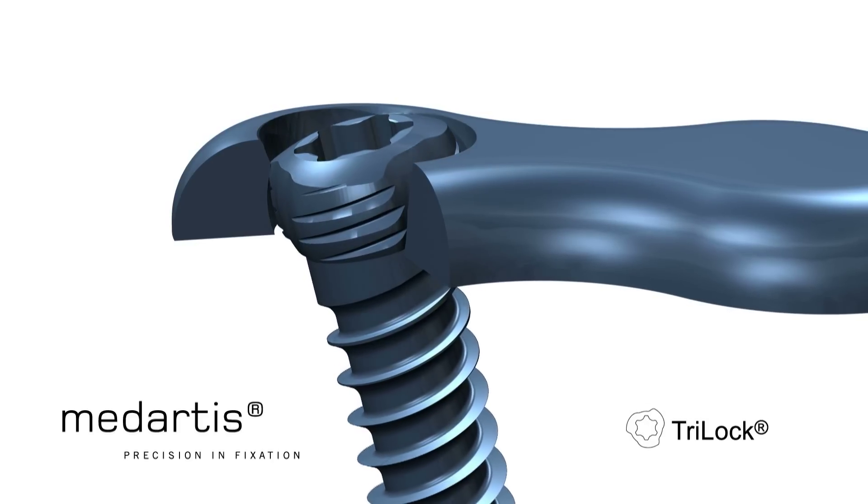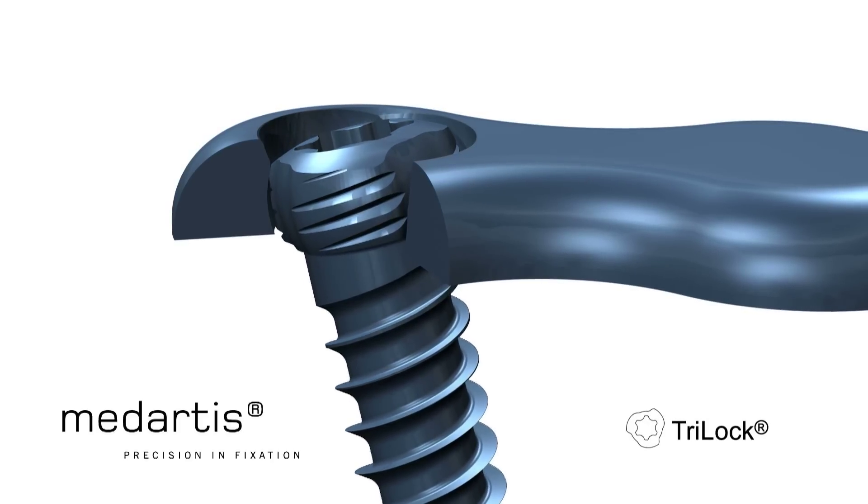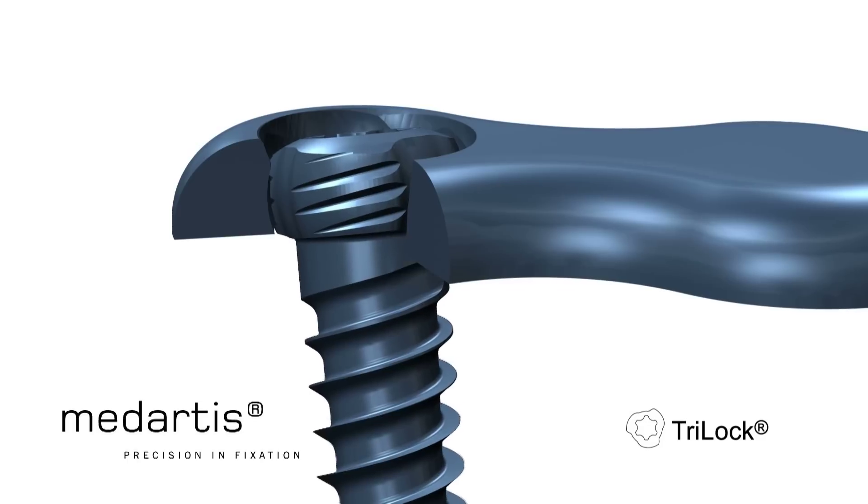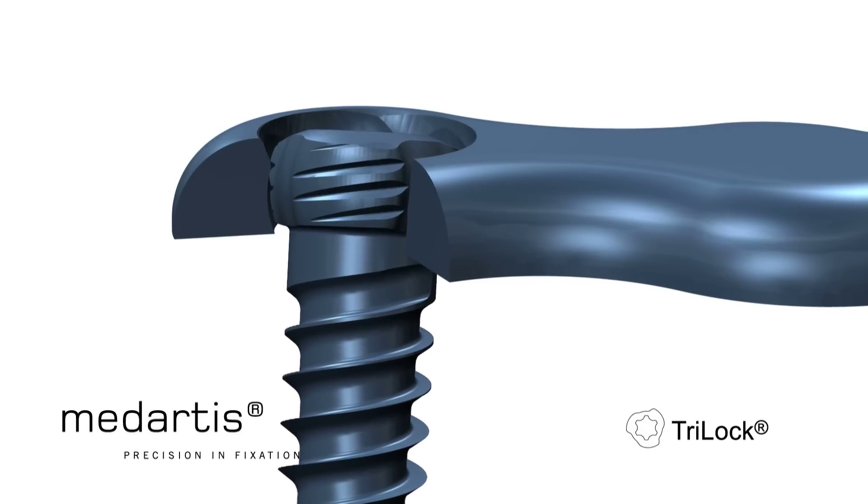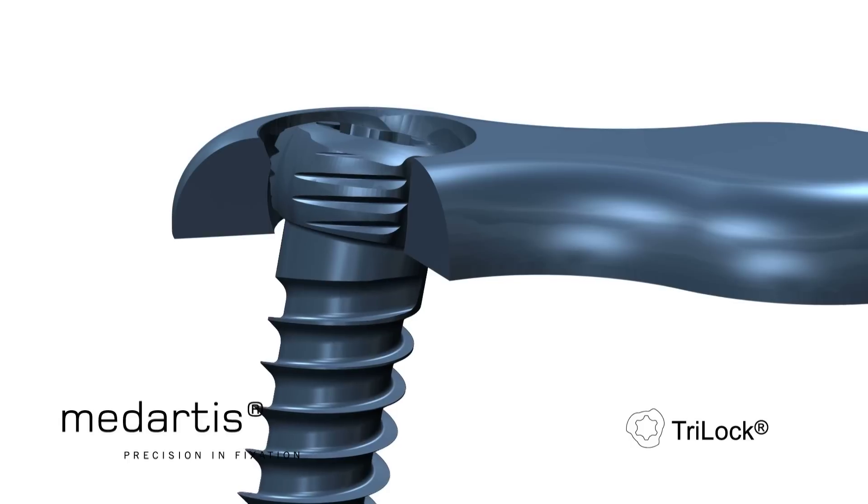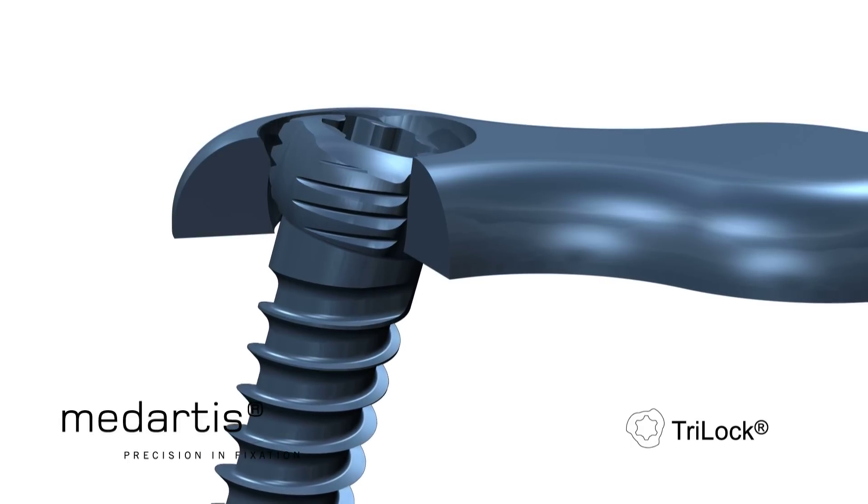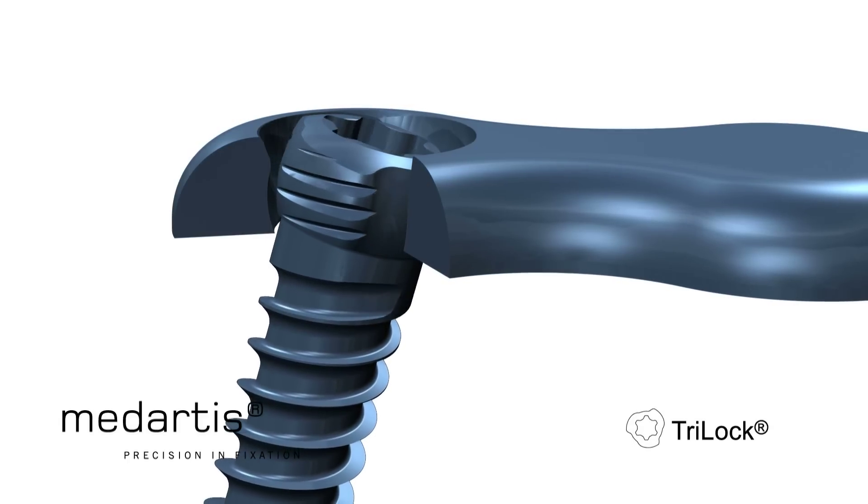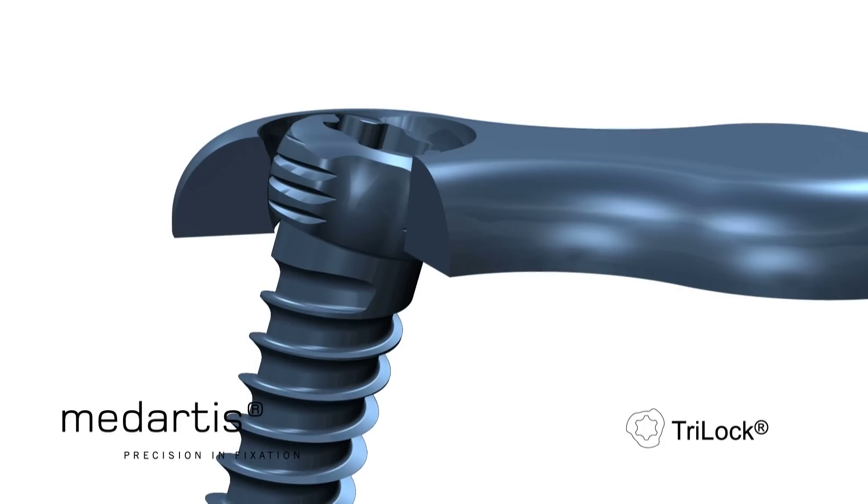The Medartis Tri-Lock solution does not require any kind of thread, which is either already integrated in the plate hole or which is created by the screw during the locking process. Therefore, any angle can be chosen. There is no force vector that will push the screw from its chosen angle and position.